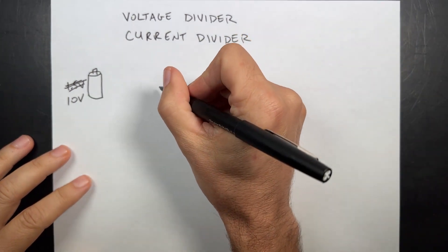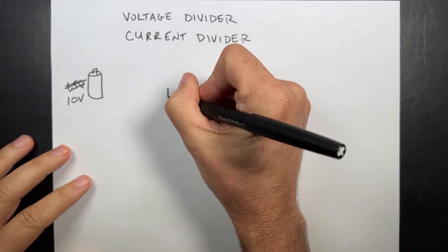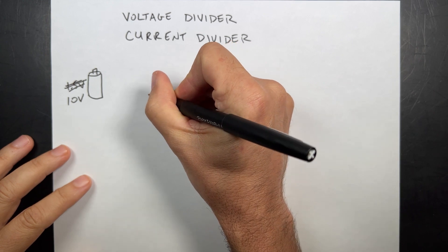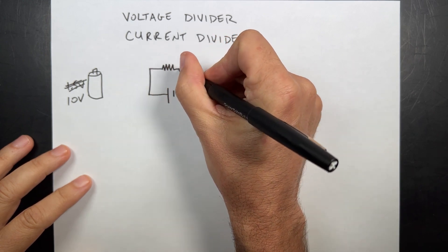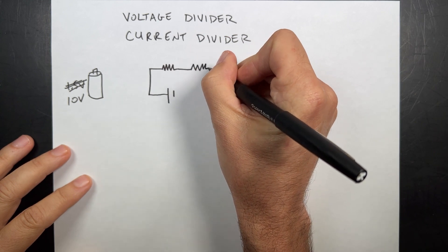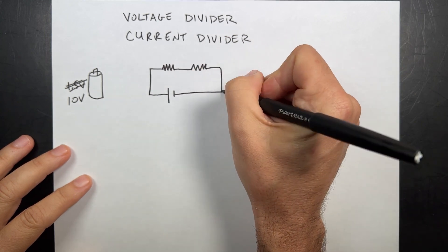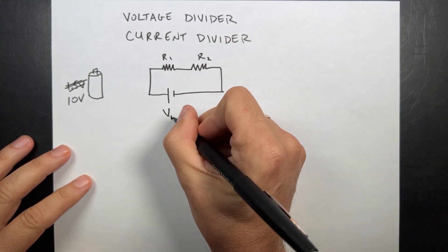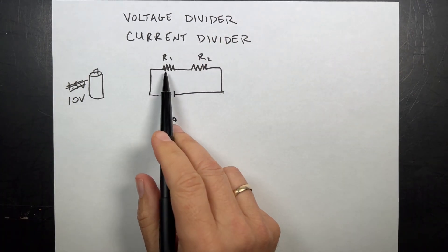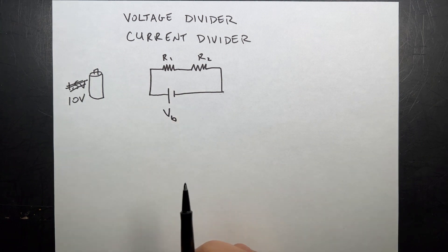Let me draw it as a circuit diagram. So here is my battery and what I'm going to do is I'm going to take two resistors like this in series, R1 and R2. So here's R1, here's R2, and let's call this VB the voltage of the battery, and I want the voltage across R1 to be 3 volts.